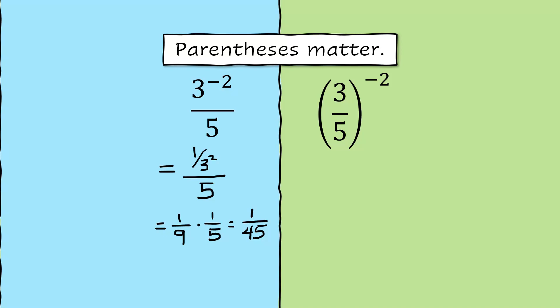Now what happens when we take the entire fraction 3 fifths, put parentheses around it, and raise that to the negative 2 power. Well in that case, the exponent is going to apply to the numerator and the denominator. So rewrite this as 3 to the negative 2 over 5 to the negative 2.